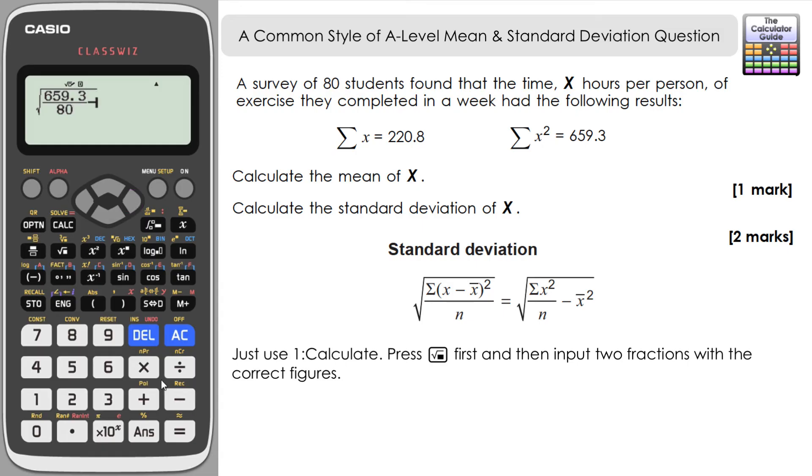Just going to navigate right and then it's subtract - then it's the mean squared. Now you can input this as the sum of x over n in brackets all squared if you wish, but as we've already got the mean from the first part of the question, 2.76, I'm just going to use that. But don't forget we need to square this, so 2.76 squared.